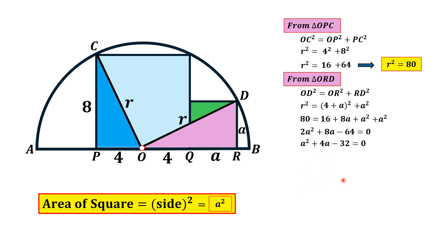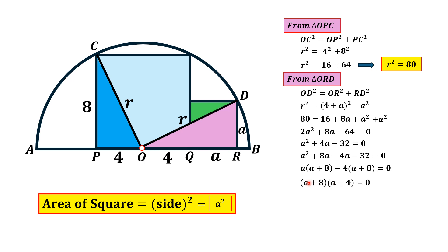To factorize, we split the middle term as +8A and −4A, giving A² + 8A − 4A − 32 = 0. Taking A common from the first two terms and −4 common from the last two: (A + 8)(A − 4) = 0. So A = −8 or A = 4. Since A is a length it cannot be negative, so A = −8 is rejected and thus A = 4.